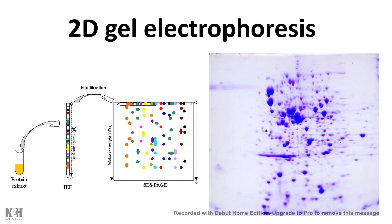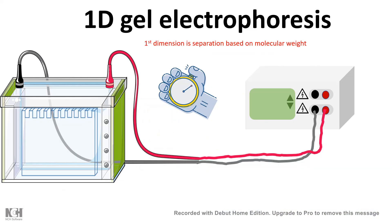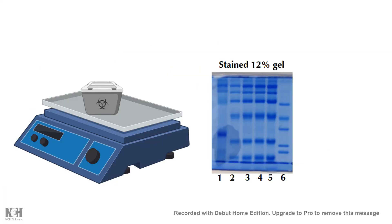We already learned about SDS-PAGE, which we can call one-dimensional electrophoresis, meaning the separation is based on one parameter. The first dimension is separation based on molecular weight. Now, there are certain problems with one-dimensional gel electrophoresis.